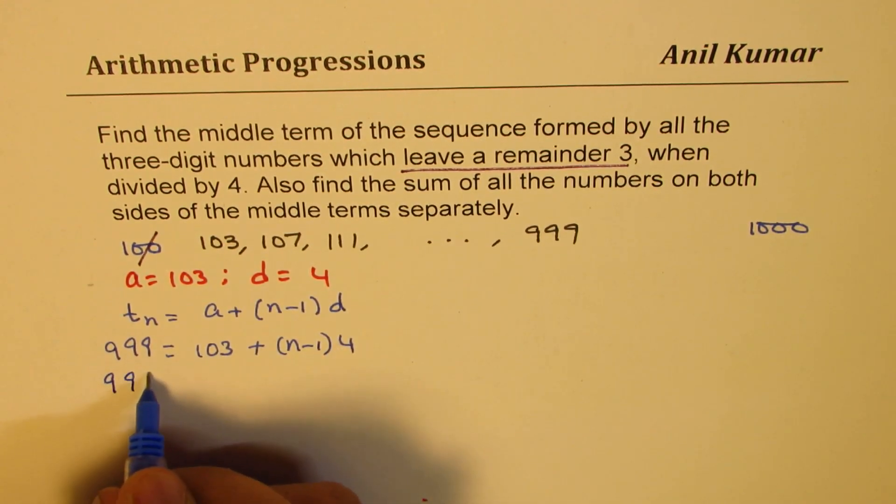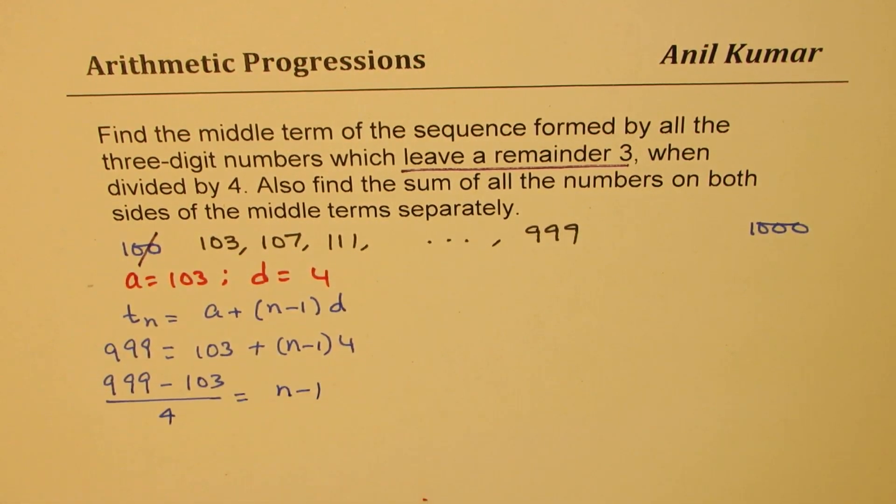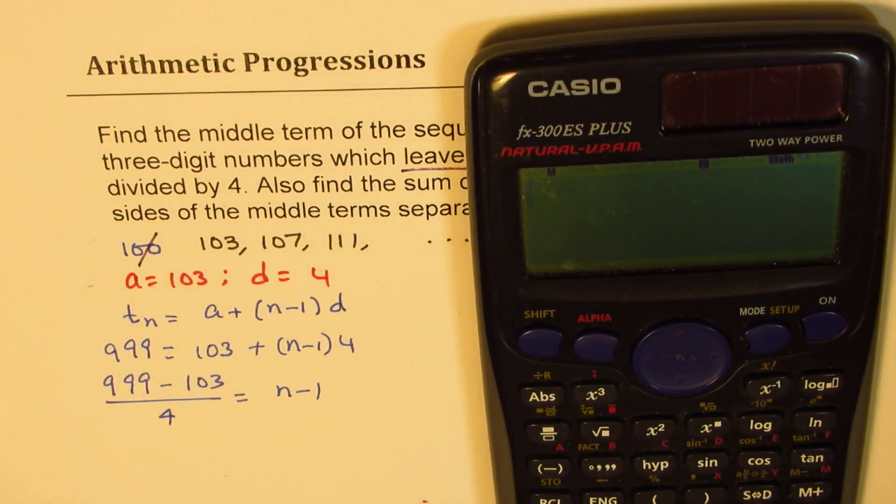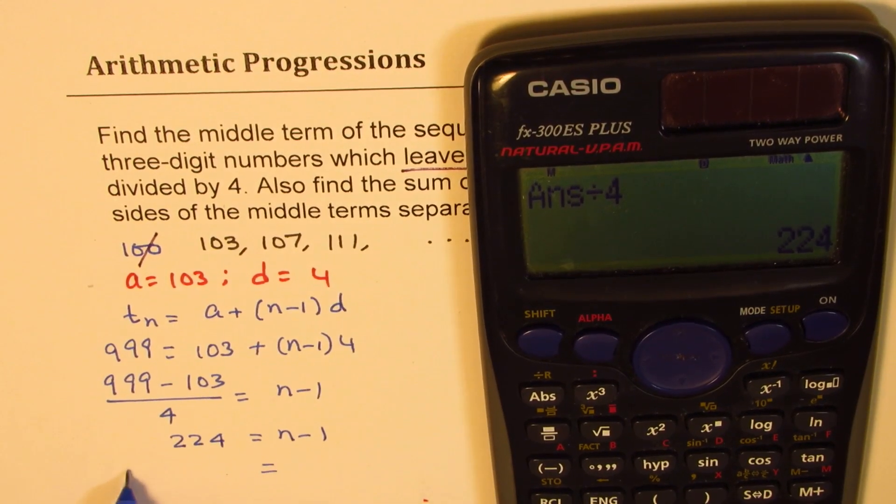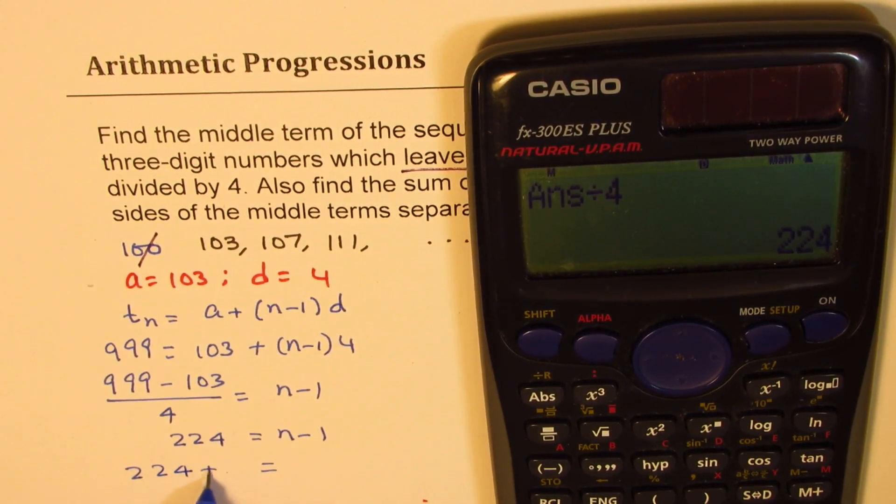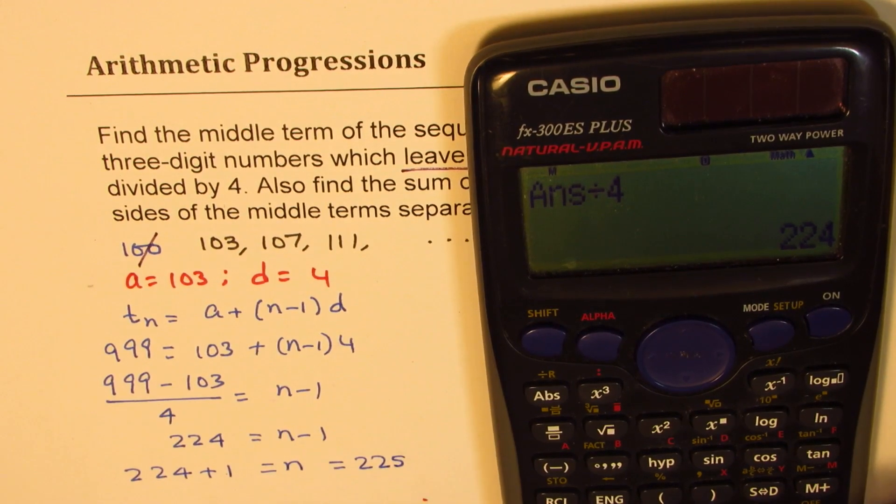We need to find what is n minus 1 and d is 4. So we can easily find by doing 999 minus 103 divided by 4 is equal to n minus 1. So let's use our calculator to find this answer. 999 minus 103 divided by 4 is equal to 224. That is n minus 1. So n will be equals to 224 plus 1. So n is 225.